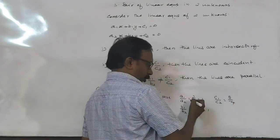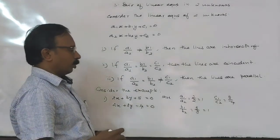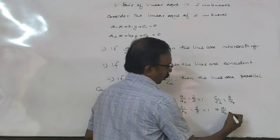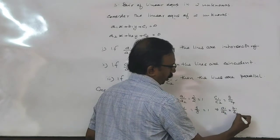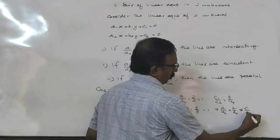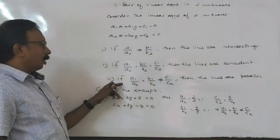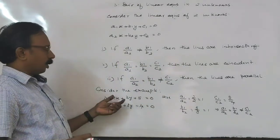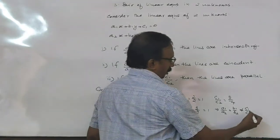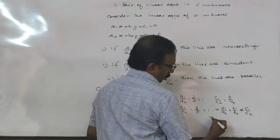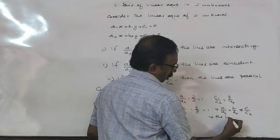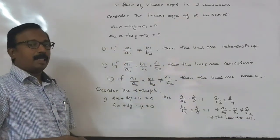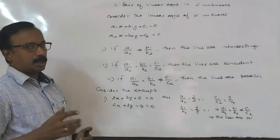If a1 by a2 is equal to b1 by b2, but not equal to c1 by c2, then these two lines are parallel. These are the parallel lines.